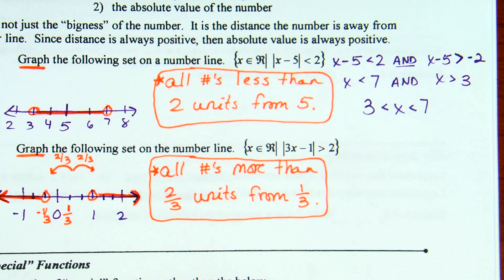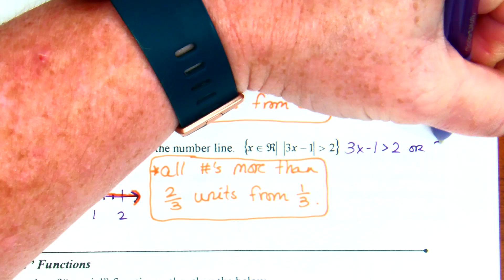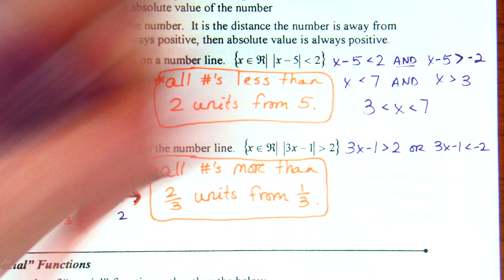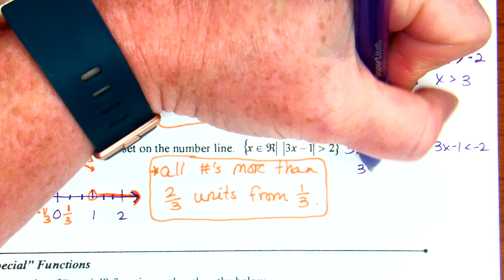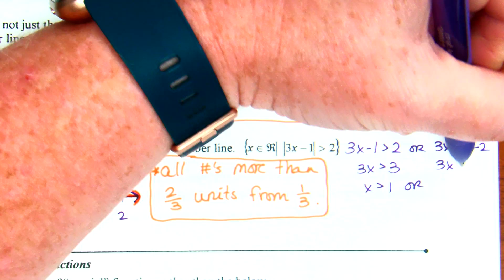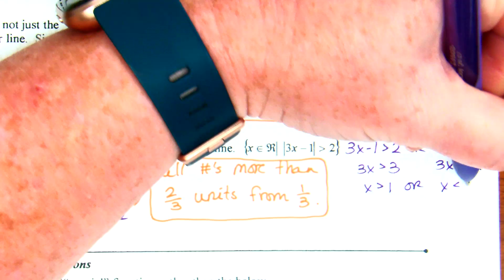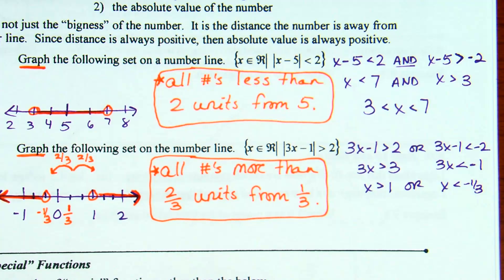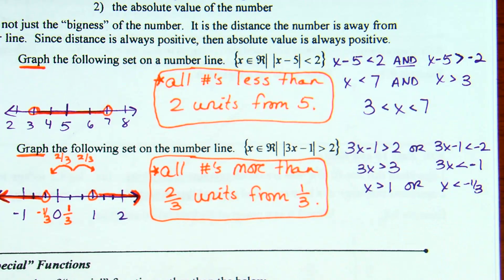Did anyone solve it out by hand to check? If you set it up by hand: 3x minus 1 greater than 2, or 3x minus 1 less than negative 2. Add 1: 3x greater than 3, x greater than 1. Or add 1: 3x less than negative 1, x less than negative one-third. That's what I graphed. There's nothing wrong with going old school, but try to look for the connection — it's an important connection to notice.